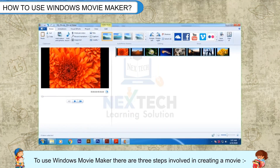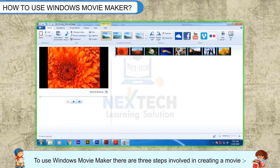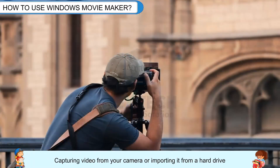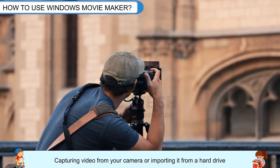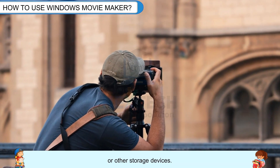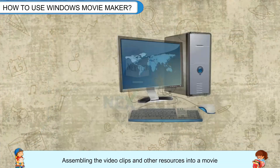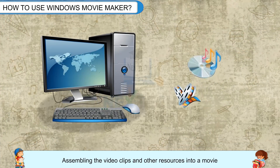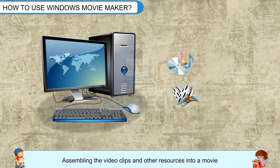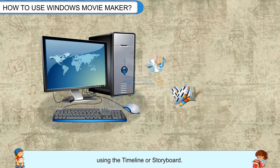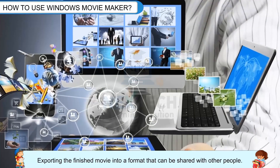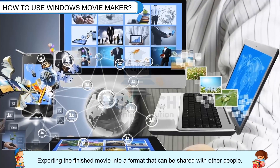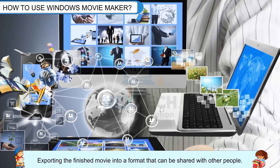To use Windows Movie Maker, there are three steps involved in creating a movie: capturing video from your camera or importing it from a hard drive or other storage devices; assembling the video clips and other resources into a movie using the timeline or storyboard; and exporting the finished movie into a format that can be shared with other people.